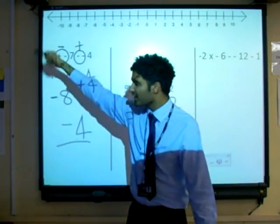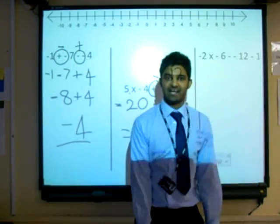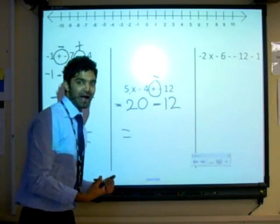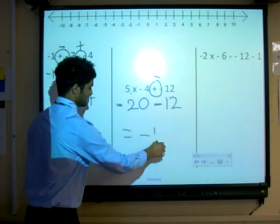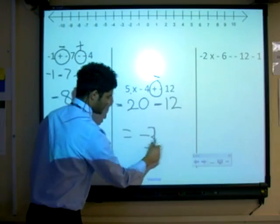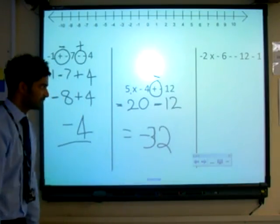So that's negative 20 subtract 12. Negative 20 is going to be somewhere way over there. And we're going, as Mr. Hawkins, we're going back. So that's going to be negative 32. Okay.